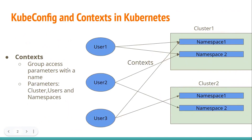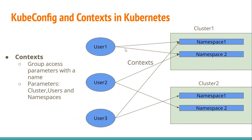The context combines or groups access parameters under a particular name. For example, if we have multiple clusters — cluster1 and cluster2 — and multiple users like user1, user2, user3: if user1 wants to access a particular namespace in cluster1, we can define a context by combining user1, namespace1, and cluster1. Similarly we can define context2 combining user1, namespace2, and cluster1. For user2 accessing namespace2 in cluster2, we define another context. This way we can define multiple contexts grouping users, namespaces, and clusters, so we do not need to specify these parameters with every kubectl command.